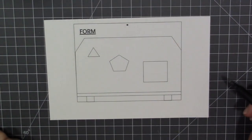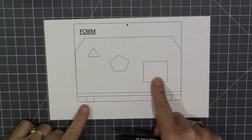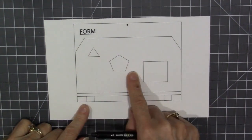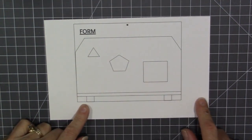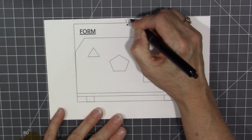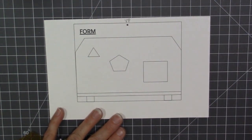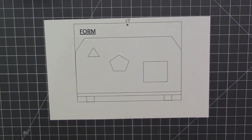The first part of the form section is to create these flat shapes into three-dimensional forms by drawing vanishing lines to the vanishing point and making the thickness of the back edges parallel to the front edges.